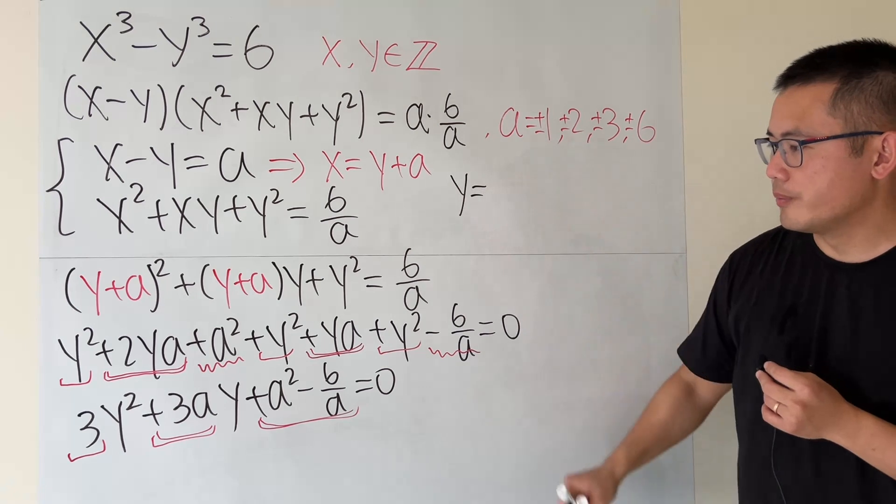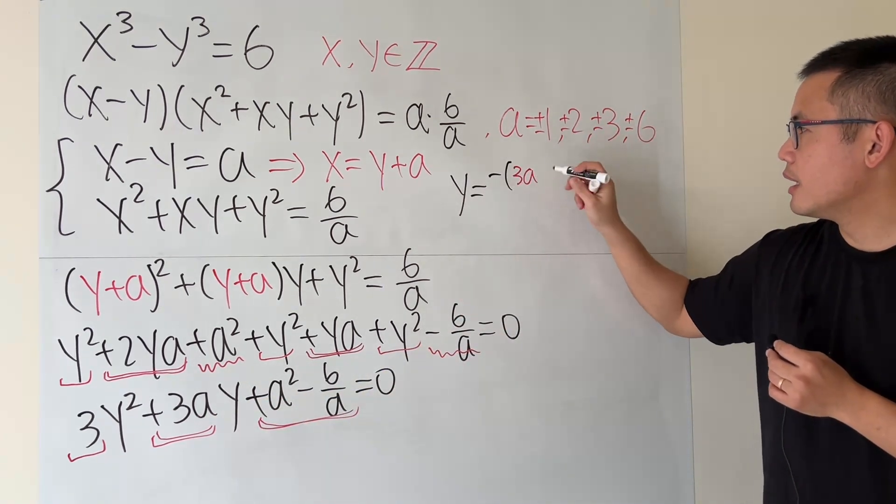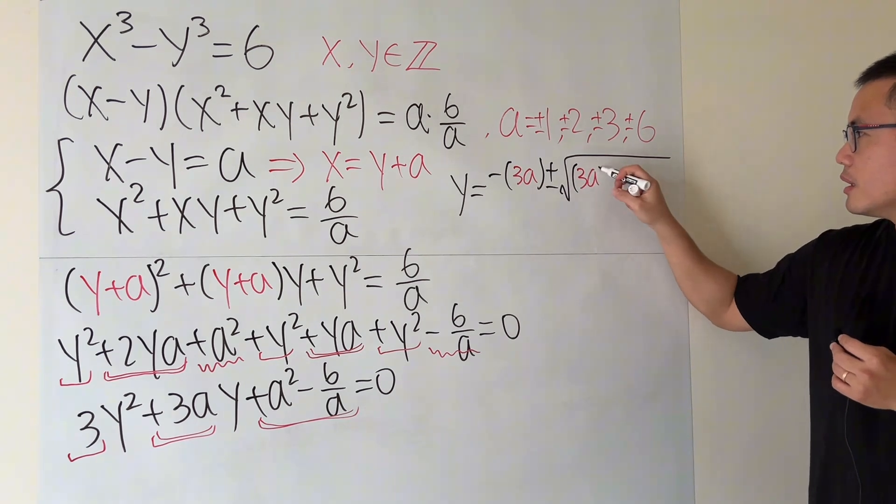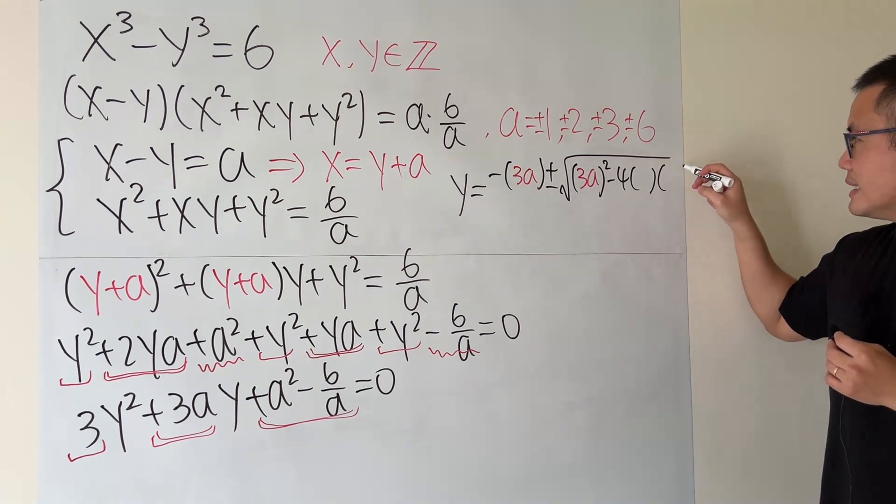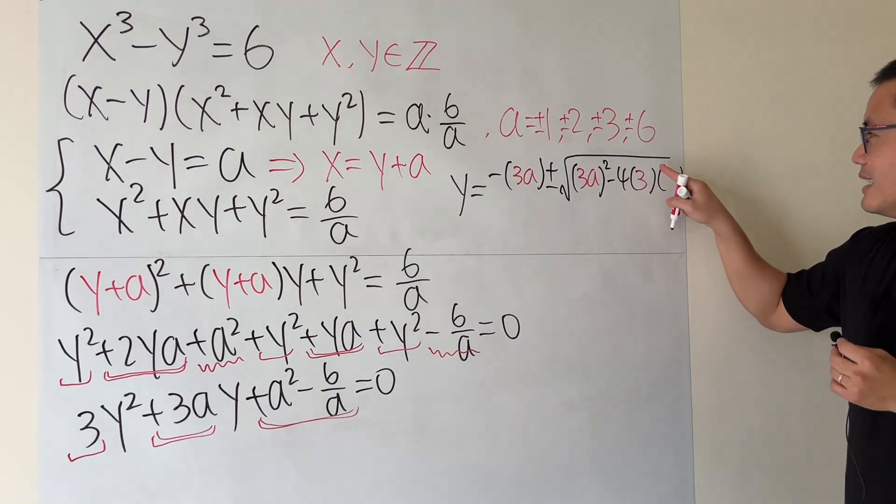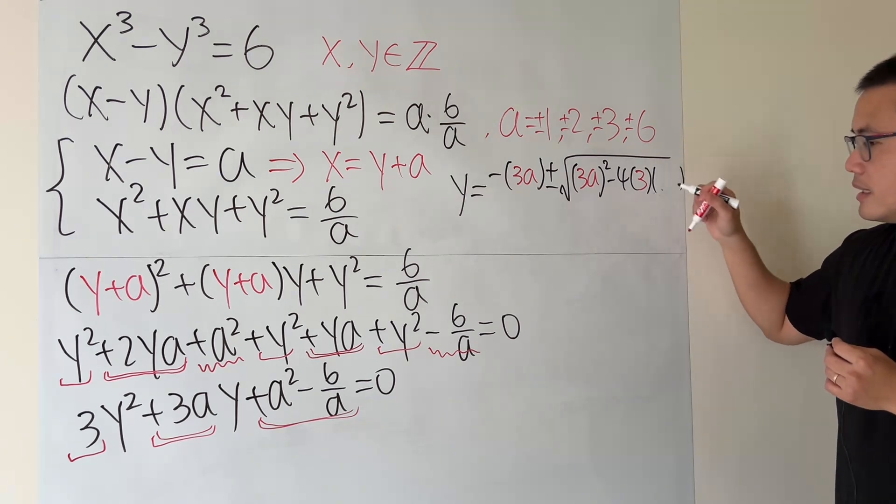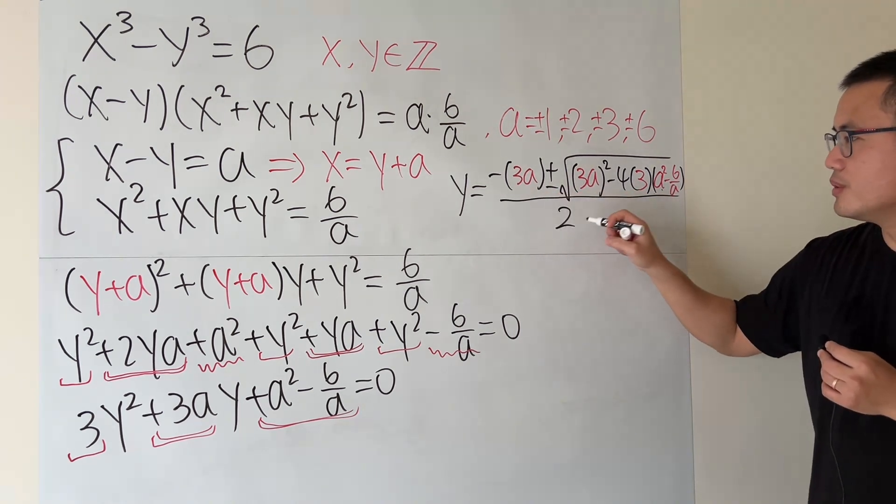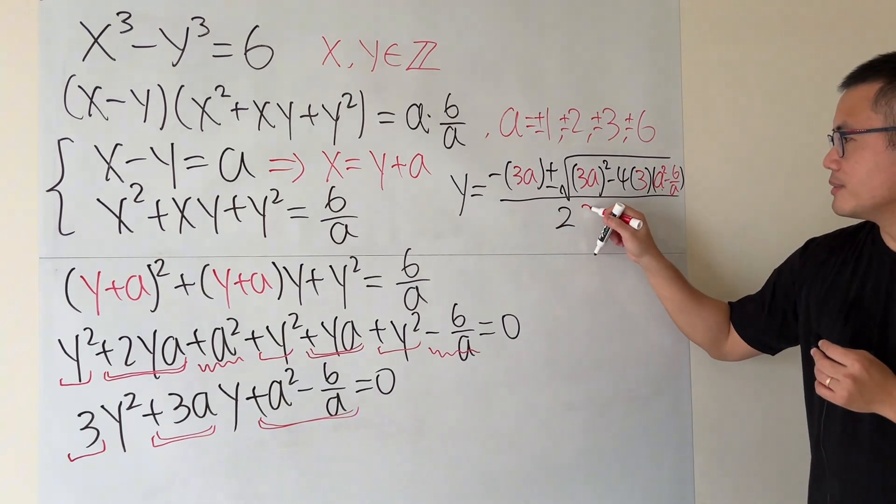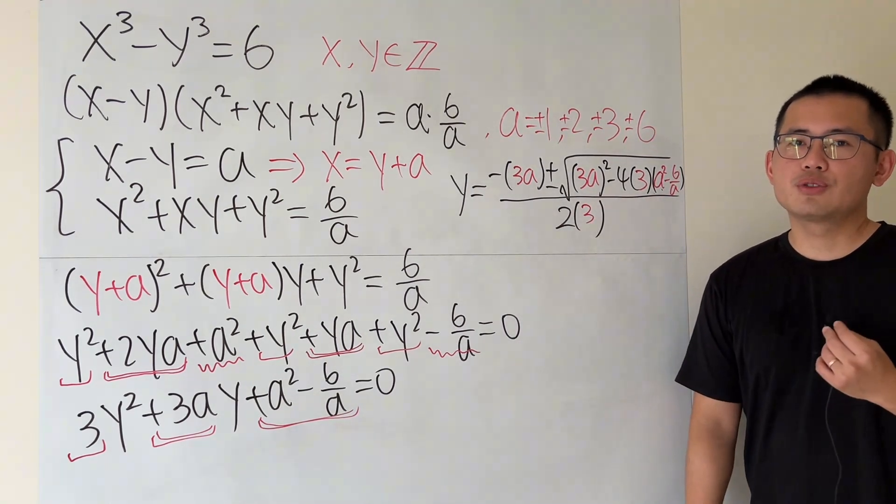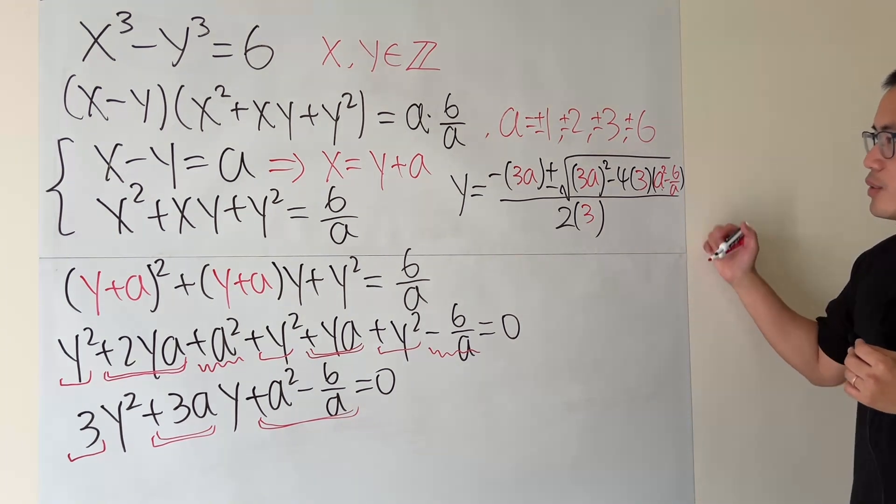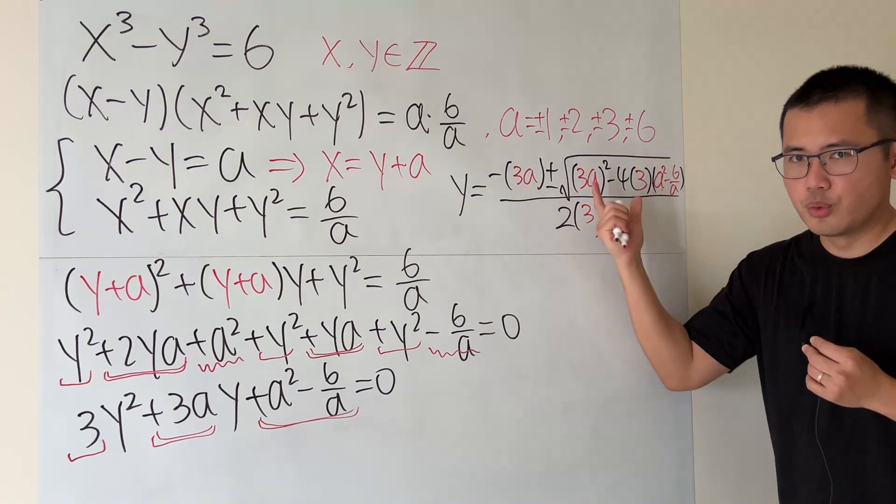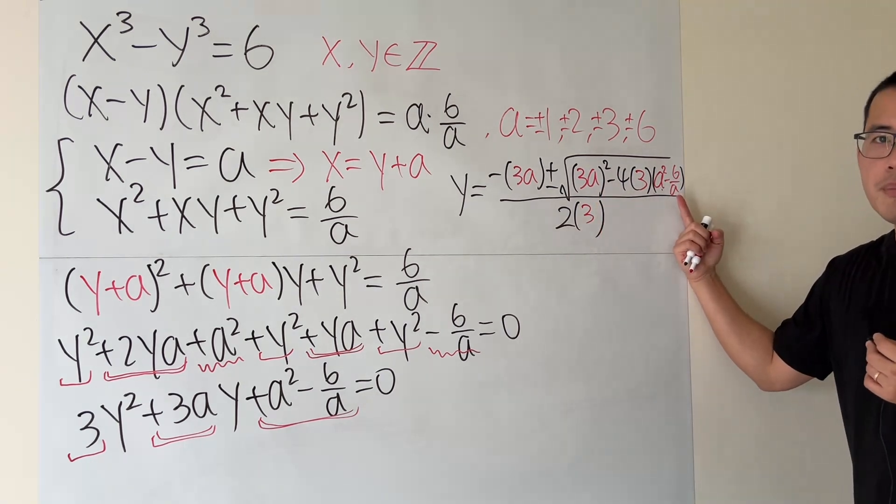So let's utilize the quadratic formula. We get y is equal to negative b. So it's negative 3a. And then plus or minus square root. And then b squared. So we have 3a squared minus 4ac. a is 3. And then c is a squared minus 6 over a. And then over 2 times that. 2 times 3. Now, remember, we're trying to find integer solutions. So in this case, when we have a quadratic equation, in order to have integer solutions, we have to make sure that the inside here, inside of the square root, which is the discriminant, it must be a positive perfect square.